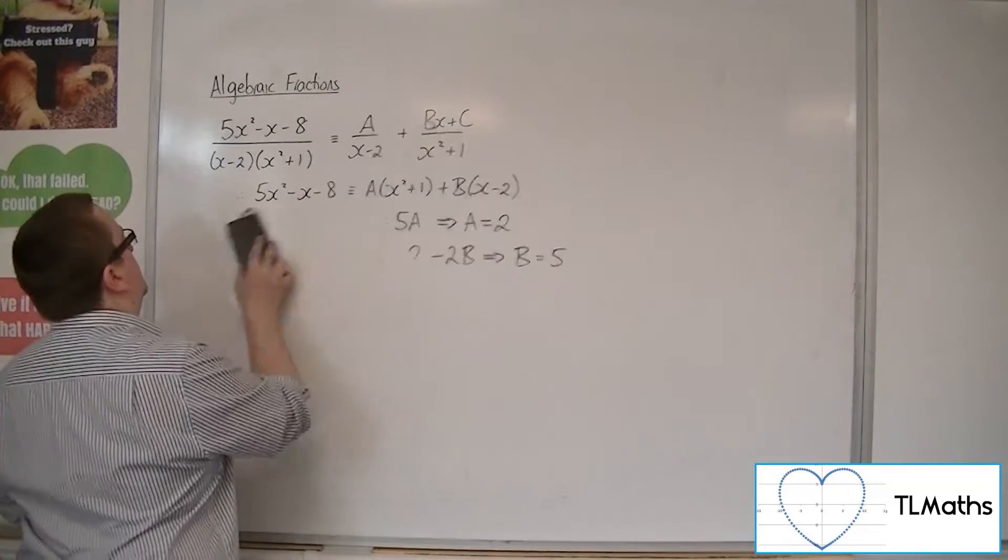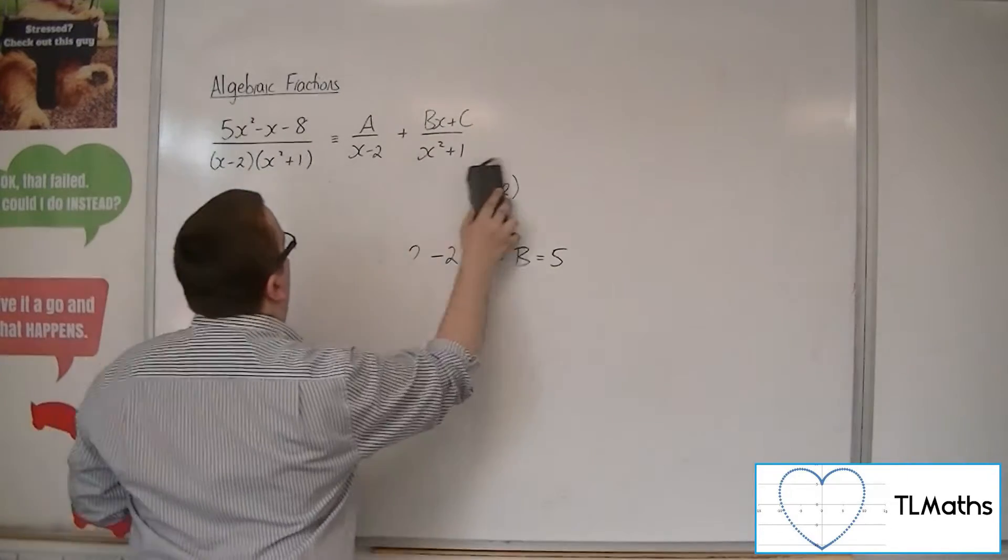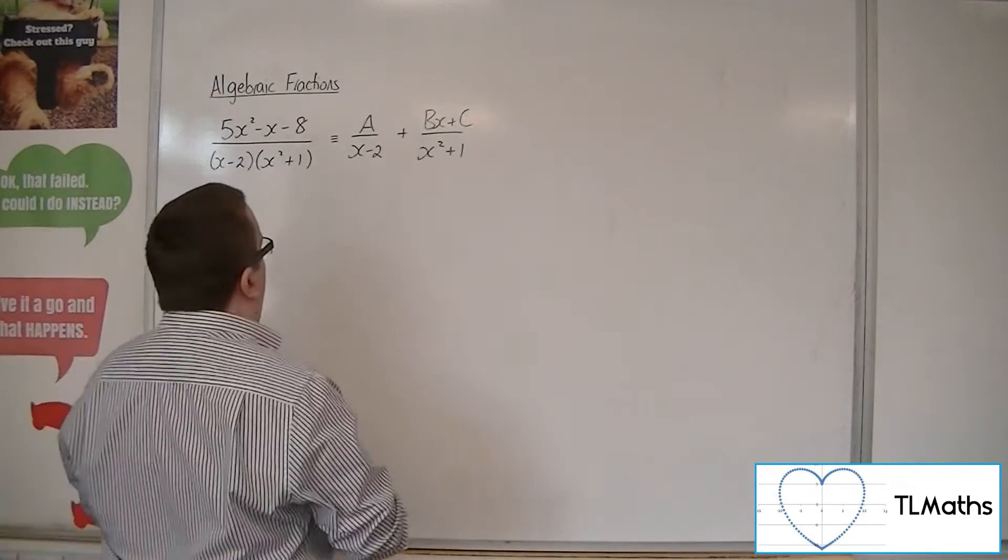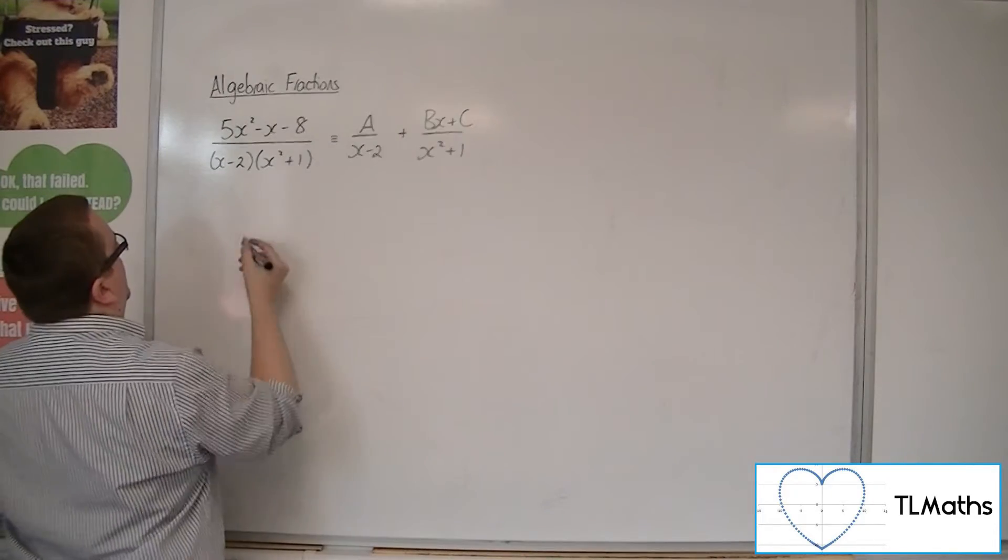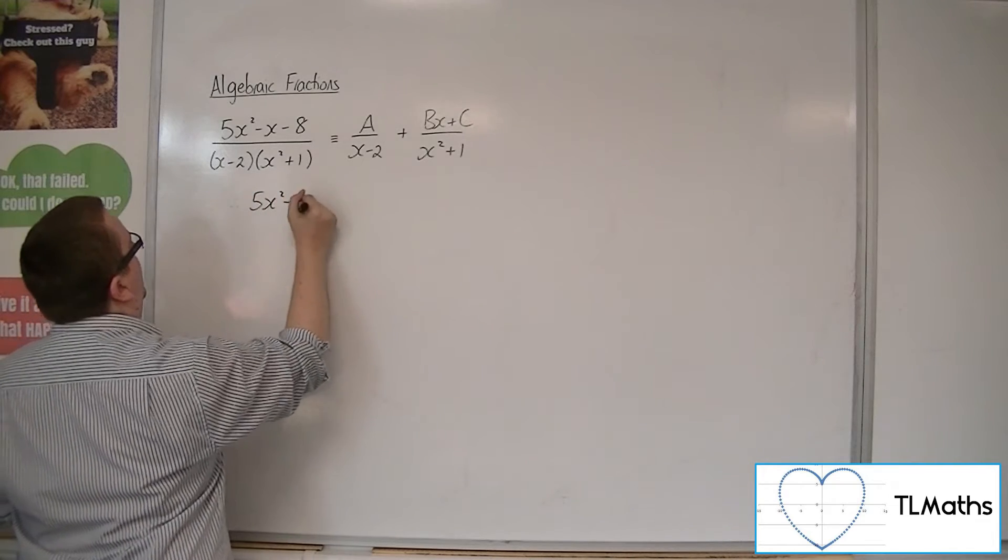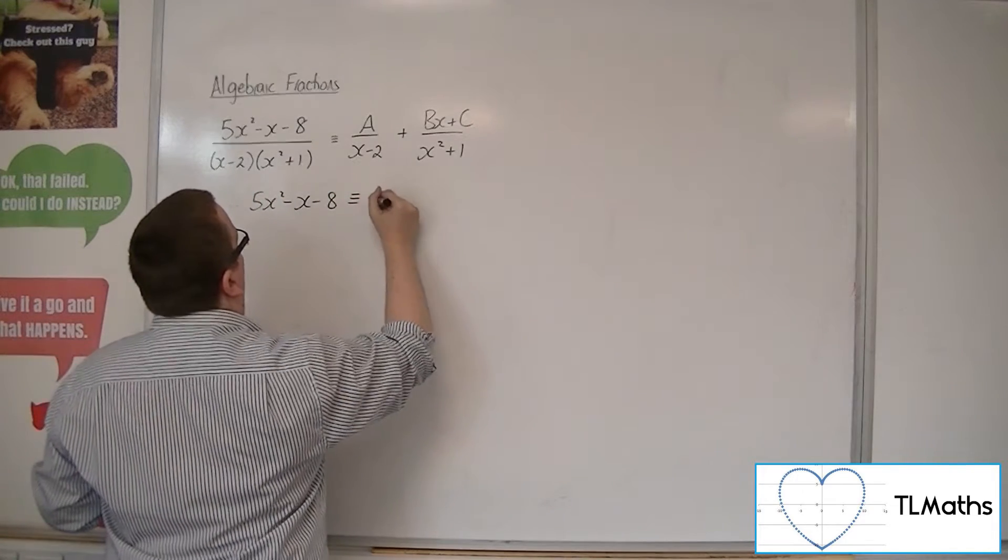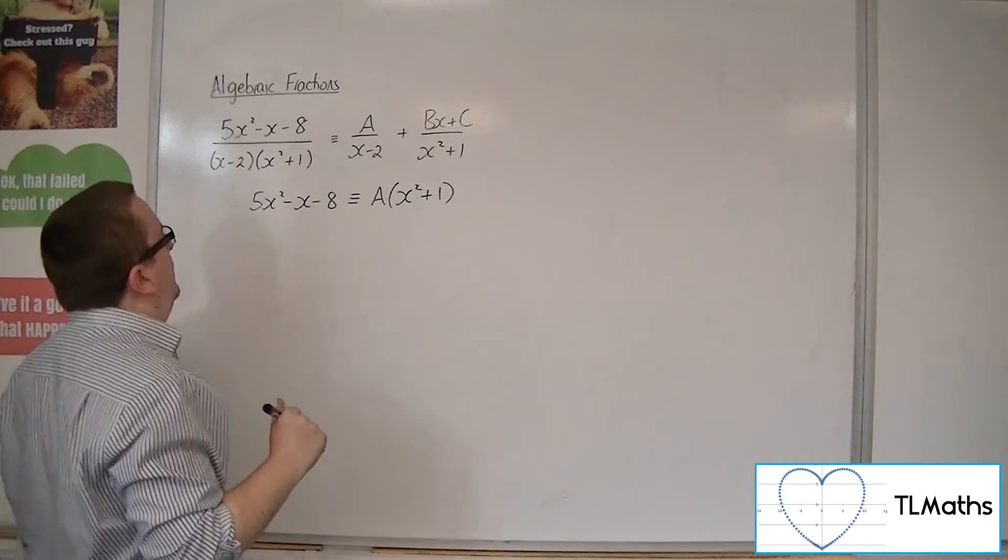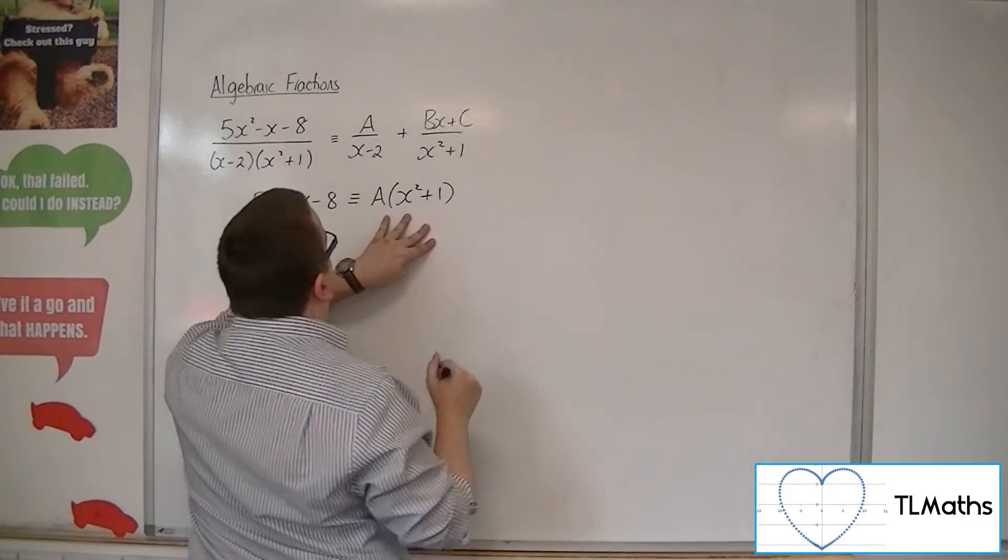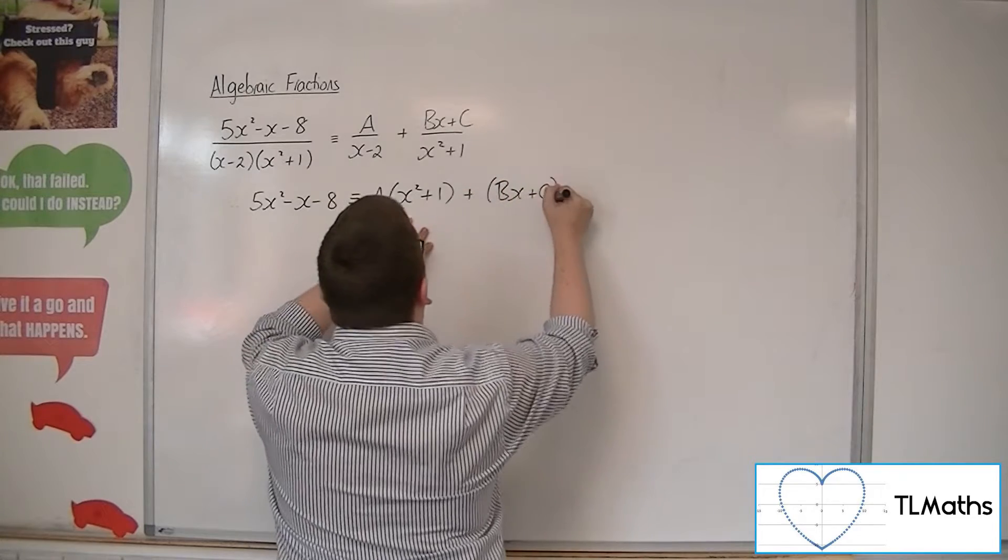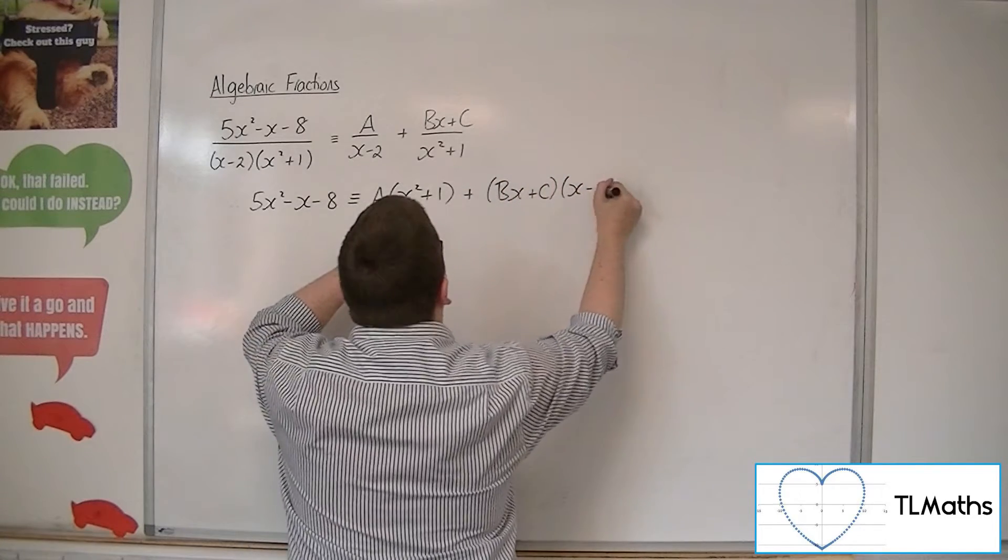So let's see what happens in this situation. So if we work it through like this, let's see if it works out. So we've got the 5x squared minus x minus 8, and then you're multiplying both sides by the x minus 2 x squared plus 1. So A gets the x squared plus 1, and the Bx plus C, which must go in a bracket with its own, gets the x minus 2.